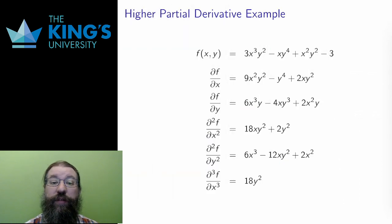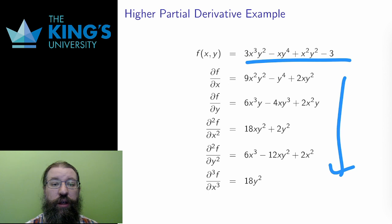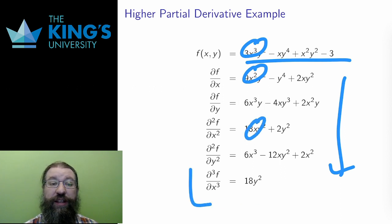Here are some examples of higher partials. This is a polynomial in x and y, and I've calculated the first few unmixed higher derivatives here, and notice how they each drop the degree in the matching variable. The polynomial has degree three in x, but its first derivative in x has degree two, and its second derivative in x has degree one, and its third derivative in x is just a constant as far as x is concerned.